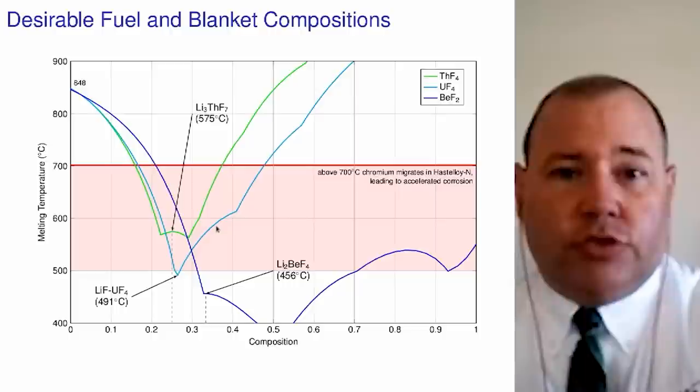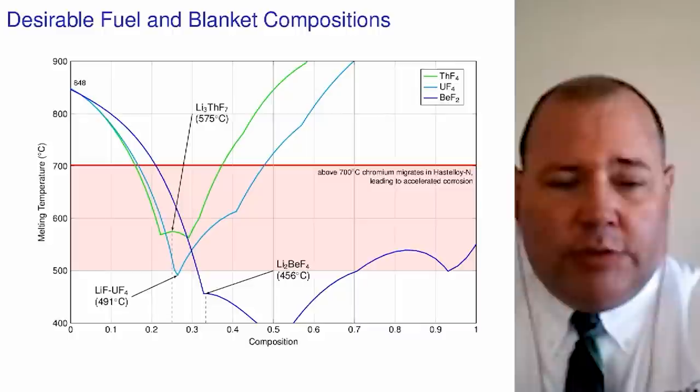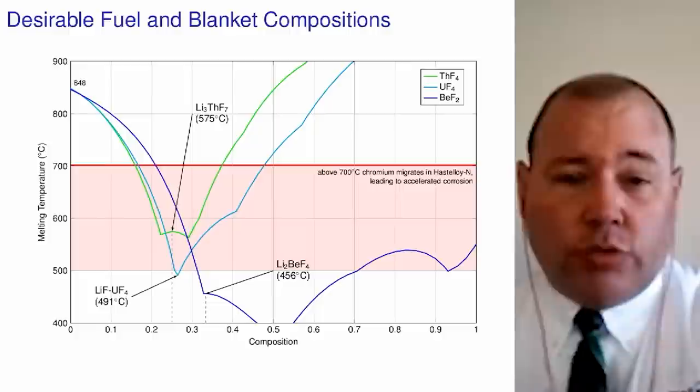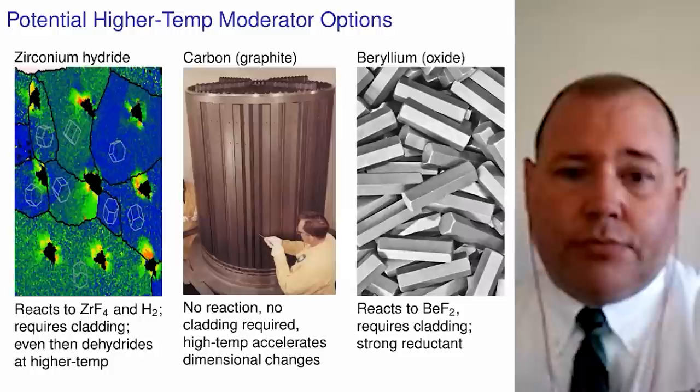This is how the MSRE was able to operate successfully for so long — because they respected a lot of these constraints. MSRE did have a much lower delta-T across their core, about 30°C, whereas we are looking at about 150°C of delta-T across the core for our design.